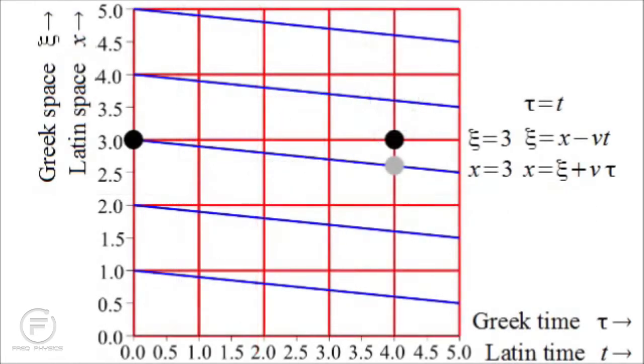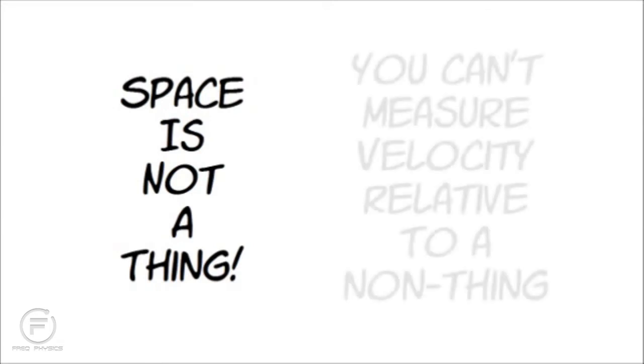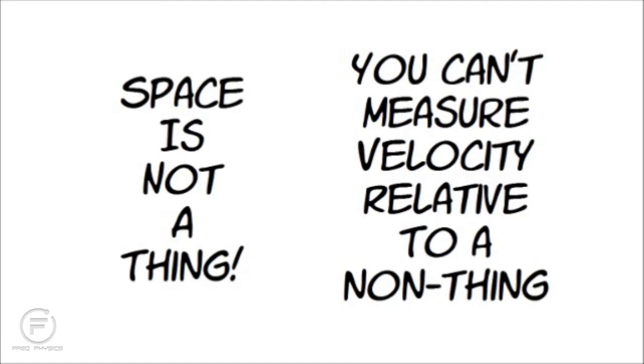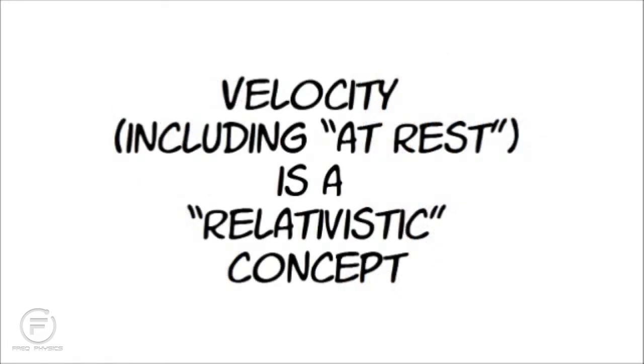You're particularly shocked when they show you a space-time diagram showing your Latin coordinates as the moving frame. You argue back and forth about who is really at rest, but every mechanical experiment you cite, the Greeks can turn around and interpret to show that they're the ones at rest. It eventually dawns on all of you that there's no way to demonstrate that you're at rest in space, because space is not a thing. Velocity — including zero velocity or at rest — is a relativistic concept that has no absolute meaning.